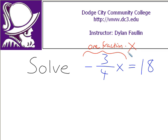You can multiply by the reciprocal and it gets rid of that fraction all at once instead of doing it piece by piece. You could solve this equation by doing each piece one at a time — getting rid of the 3, then the 4, then the negative — but this trick of multiplying by the reciprocal takes care of everything all at once, which is a really nice technique. So what we're going to do is multiply by the reciprocal.